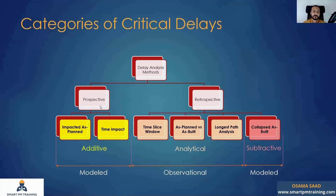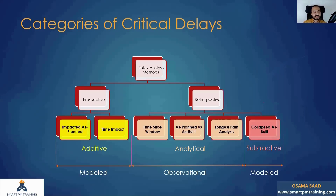In the prospective method, I add fragment additional activities — activities that did not originally exist in the original program of work. For example, if I receive a variation order, I then have to submit an additional material submittal, wait 90 more days for material delivery, and then start the relevant construction activity. So I am adding additional activities to represent the delay.